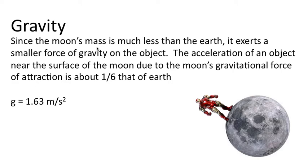Since the Moon's mass is significantly less than the Earth, it exerts a smaller force of gravity on the object. The acceleration of an object near the surface of the Moon, due to the Moon's gravitational force of attraction, is about one-sixth of Earth—so it's not 9.8, it's only 1.63 meters per second squared.